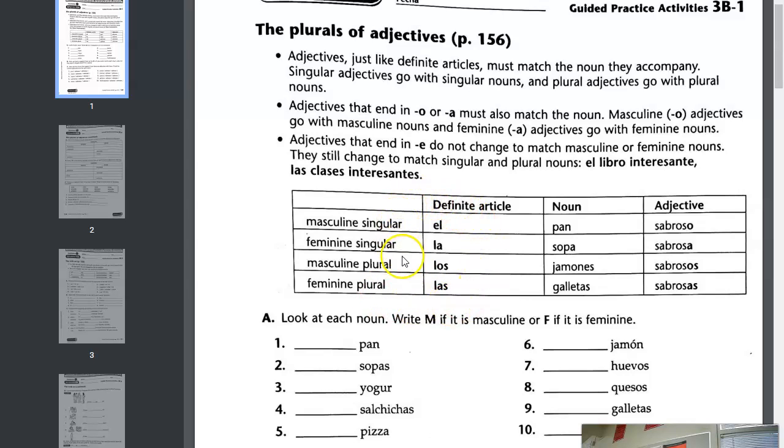Definite article in English just translates to the, like the bread, el pan, or la sopa, the soup. Los jamones, the hams. I've actually never seen jamón plural before. And las galletas would be the cookies. You can see how the adjective agrees too.